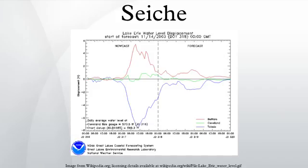Seiches can also be induced by tsunamis, a wave train generated in a body of water by a pulsating or abrupt disturbance that vertically displaces the water column. On occasion, tsunamis can produce seiches as a result of local geographic peculiarities. For instance, the tsunami that hit Hawaii in 1946 had a 15-minute interval between wave fronts. The natural resonant period of Hilo Bay is about 30 minutes. That meant that every second wave was in phase with the motion of Hilo Bay, creating a seiche in the bay. As a result, Hilo suffered worse damage than any other place in Hawaii, with the tsunami seiche reaching a height of 26 feet along the Hilo Bay front, killing 96 people in the city alone.